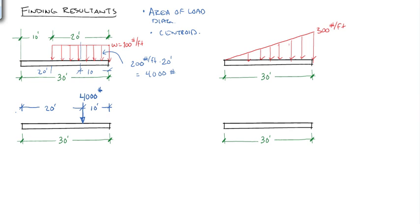On the right, we have a triangle. The area of a triangle is 300 pounds per foot times 30 feet divided by 2. That's one-half base times height. And that gives us 4,500 pounds. Notice we have pounds per foot times feet, so the feet cancel out and we get pounds.